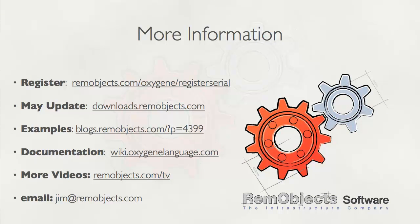I hope you've enjoyed this webinar on Metro development with Embarcadero Prism XE 2.5. Be sure to register your Prism XE 2.5 serial number at remobjects.com to get access to support downloads and betas. Get the May update to do everything we saw in this webinar. Examples will eventually be included with Embarcadero Prism, but for now visit blogs.remobjects.com and check out blog post 4399. Documentation is available at wiki.oxygenlanguage.com, and you can get more videos at remobjects.com/tv. Until next time, this has been Jim McKeith from RemObject Software — thank you very much.